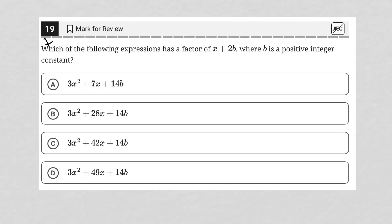So this question says, which of the following expressions has a factor of x plus 2b, where b is a positive integer constant? So very important, b is a positive integer constant.